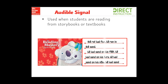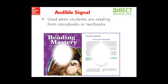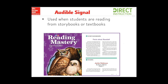The second signal is the audible signal, which you'll use at all levels of Reading Mastery. This is used only when students are reading from their storybooks or textbooks. This signal is important for students to be able to hear because their eyes won't be on you as the teacher — they'll be in their books. Make sure you're using a signal they can hear, that they're responding after the signal, and that it's something you're comfortable with. It could be a tap on your presentation book or a snap — whatever elicits a great group response from your students.